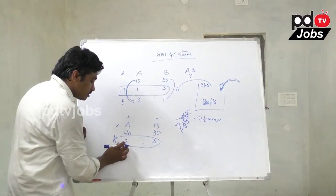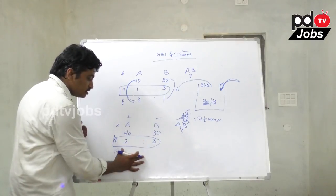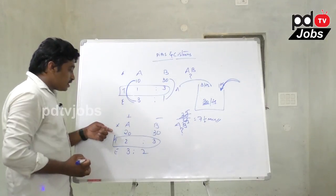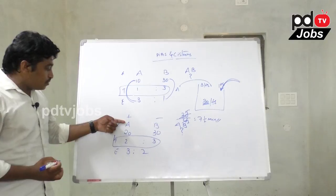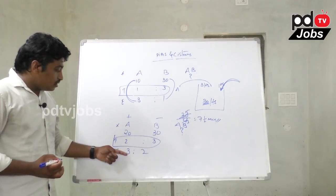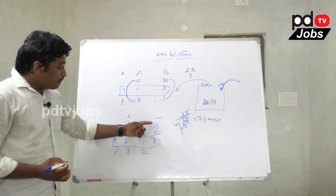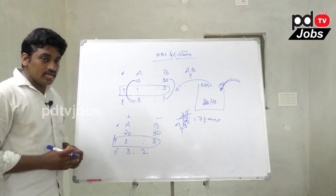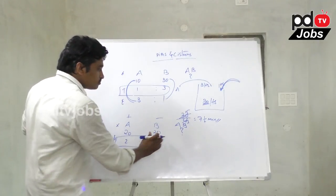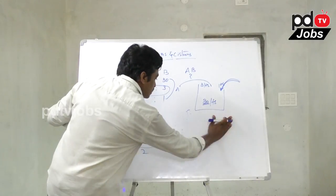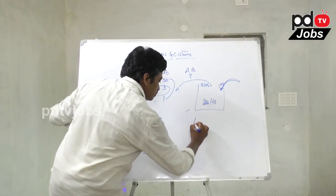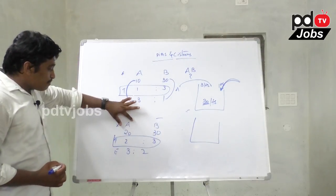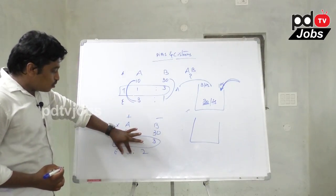The efficiency ratio is 3 to 2. Pipe A fills at 3 liters per minute and pipe B empties at 2 liters per minute. The total tank capacity is 60 liters.